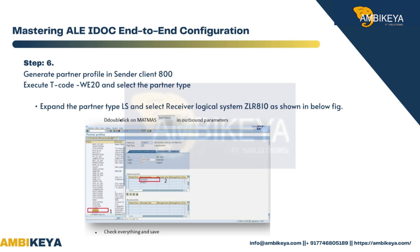Step 6: Generate partner profile in sender client 800. Execute T-code WE20 and select the partner type. Expand the partner type LS and select receiver logical system ZLR810, as shown in the figure below.